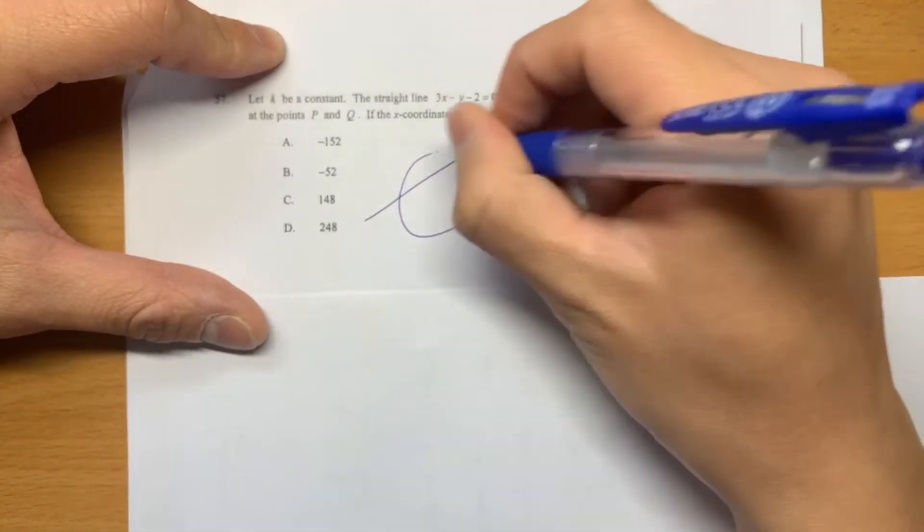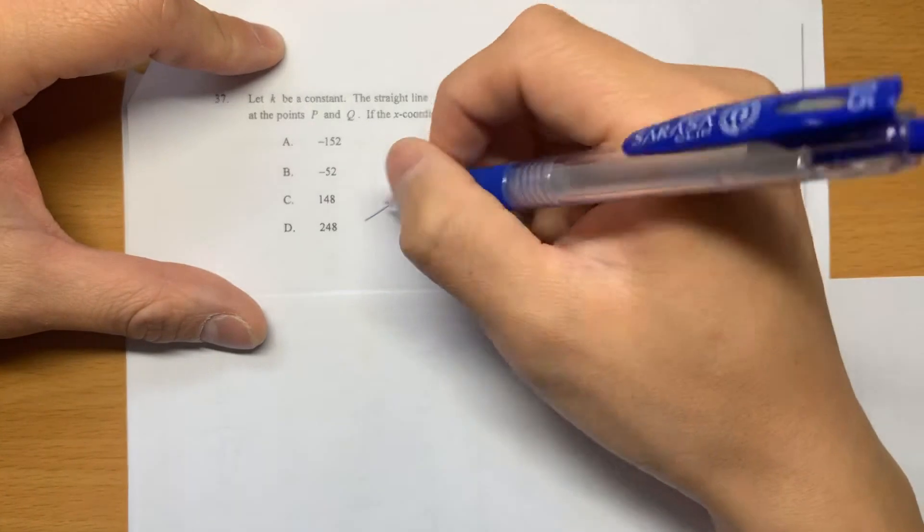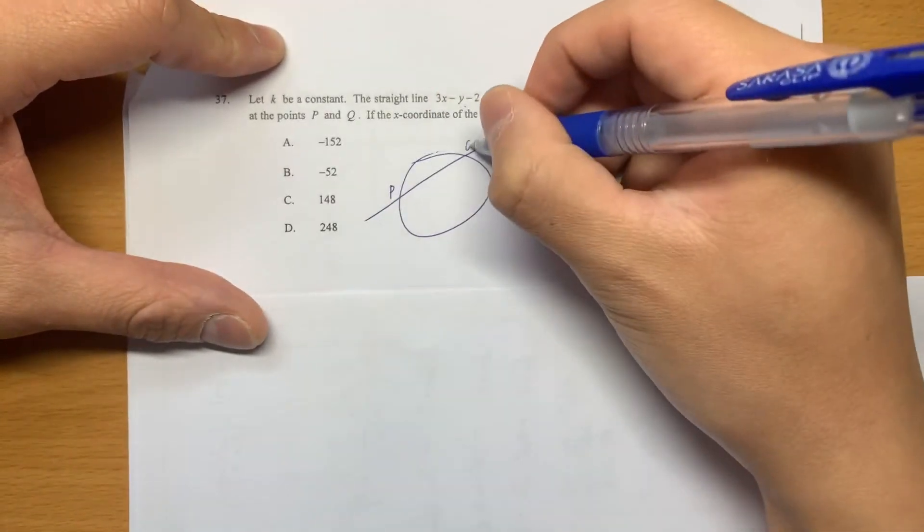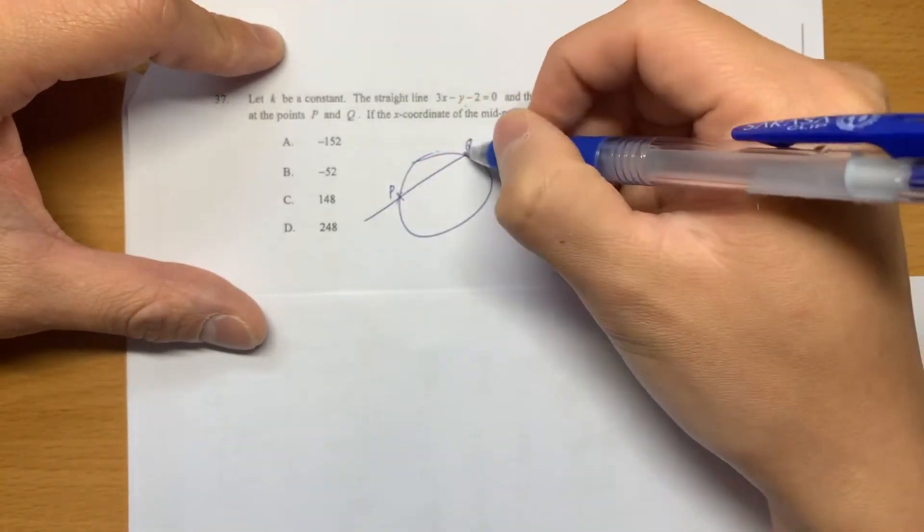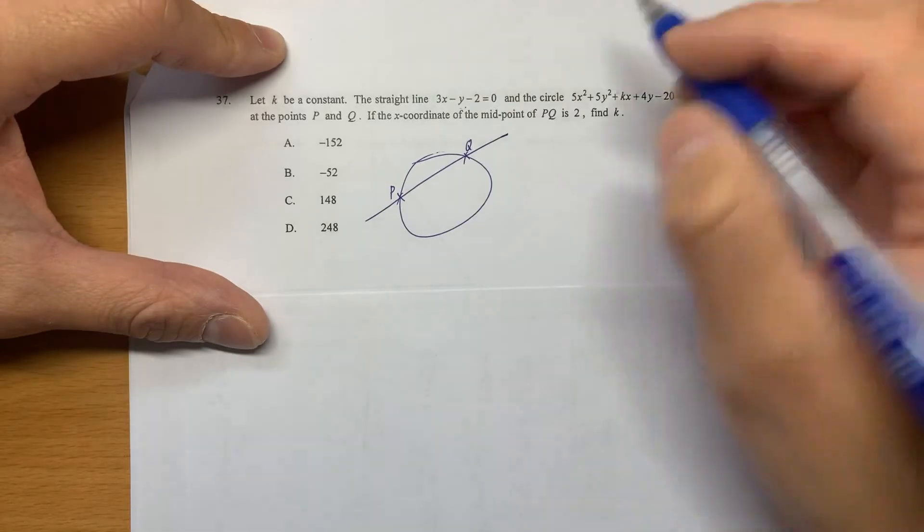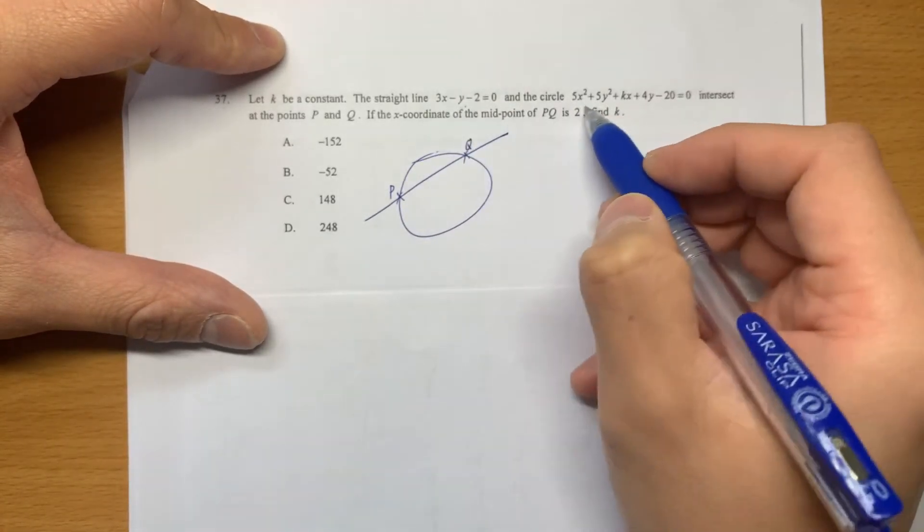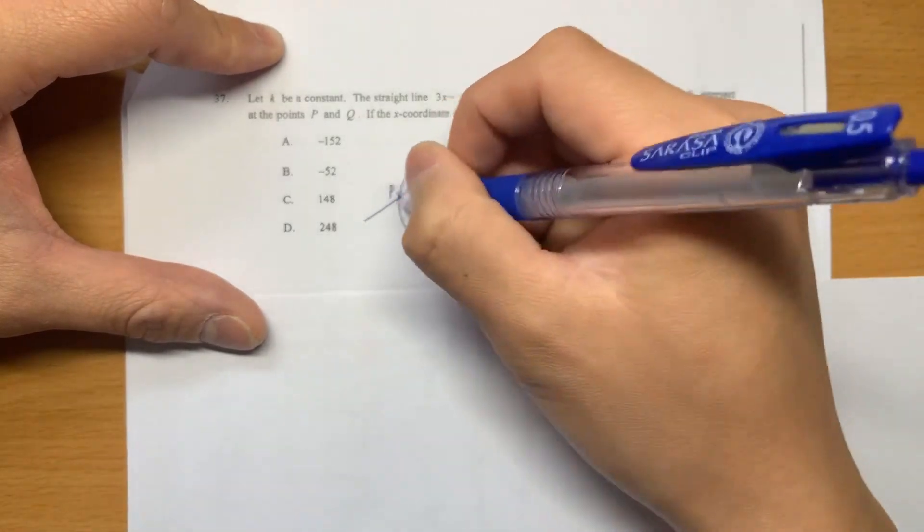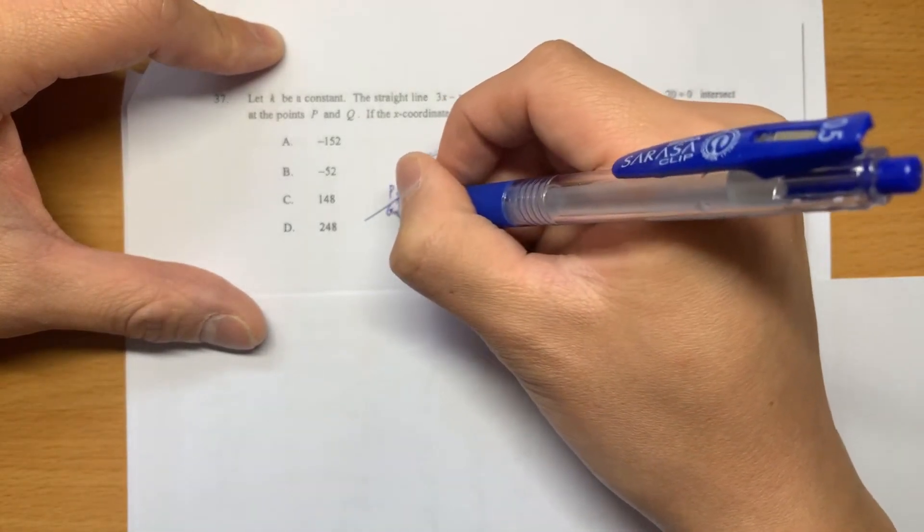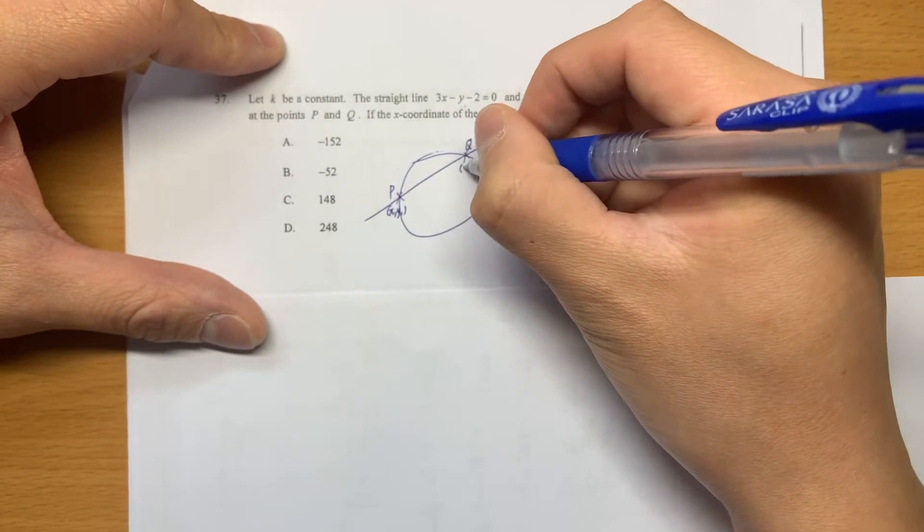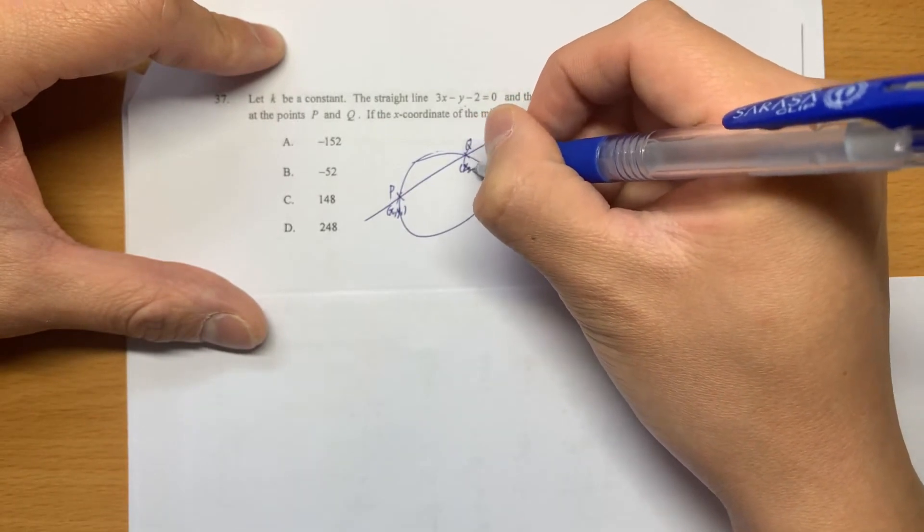And then there is a circle. And then they say that there are two points P and Q. It's talking about the intercept point. What it's asking is the x coordinate of the midpoint of PQ. So if this coordinate is x1, y1. This is x2, y2.